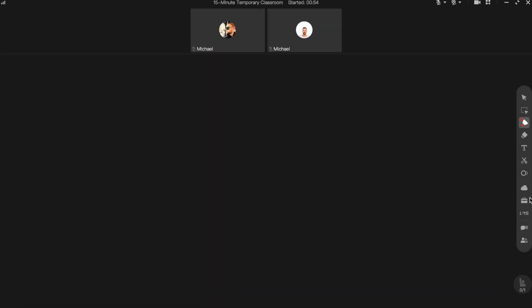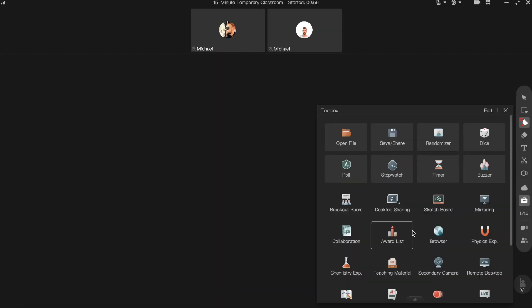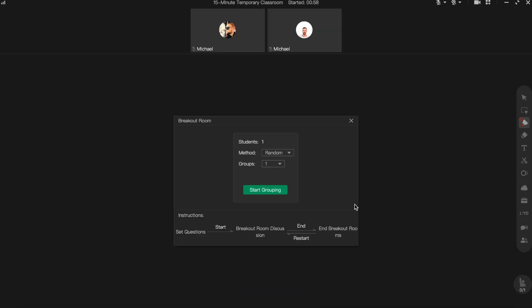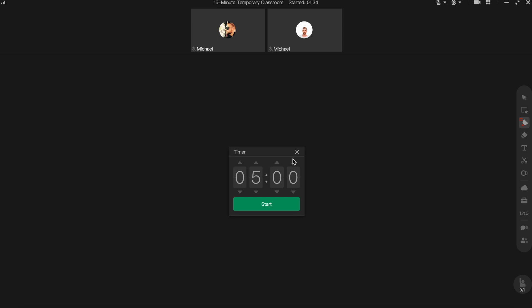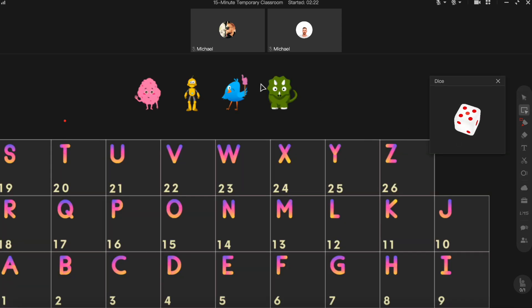Breakout rooms are another fantastic feature. With just a few clicks, you can divide your class into smaller groups for collaborative activities or discussions. This is particularly useful for language teachers who want students to practice in pairs or small groups. Finally, don't forget about tools like the timer and the dice. They might seem simple, but they're incredibly effective for creating a structured and interactive learning environment.